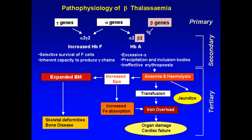When the beta genes are defective they do not produce beta globin chains, so alpha genes combine with gamma globins produced by the normal gamma genes, resulting in increased production of Hemoglobin F. The secondary effects are: increased synthesis from gamma genes, increased gamma globulin production, decreased Hemoglobin A, and increased Hemoglobin F. Other effects include excessive alpha chain precipitation and formation of inclusion bodies, as well as ineffective hematopoiesis.